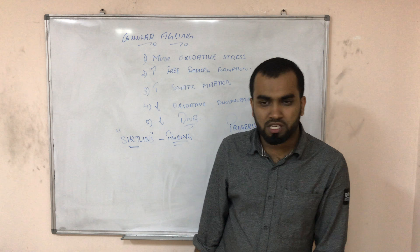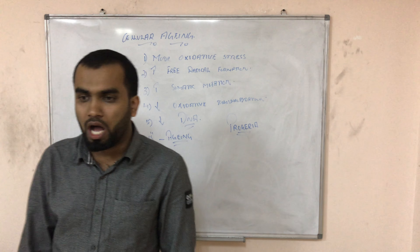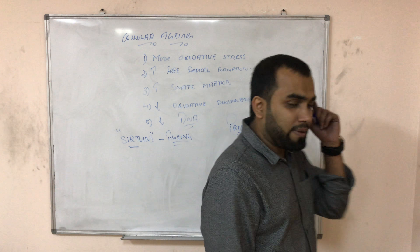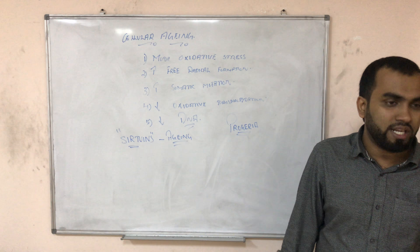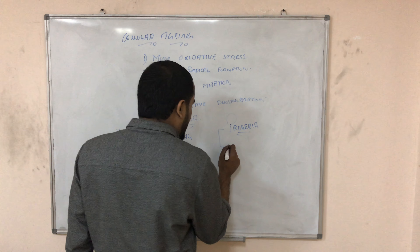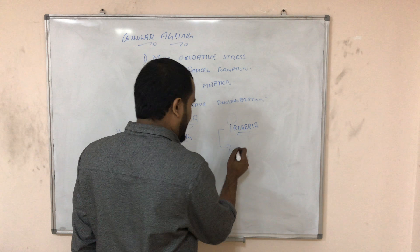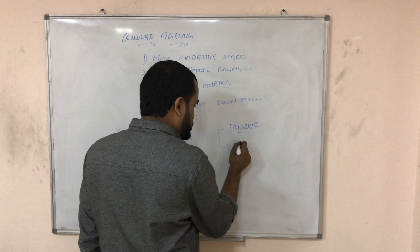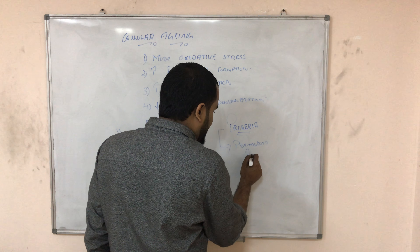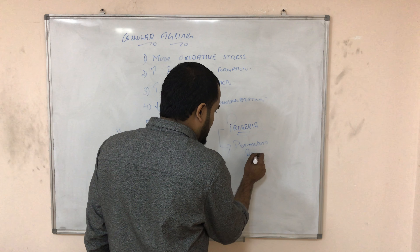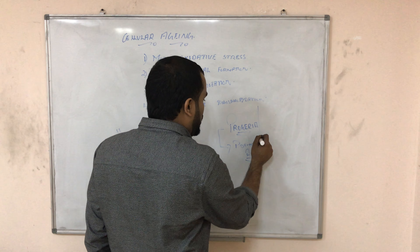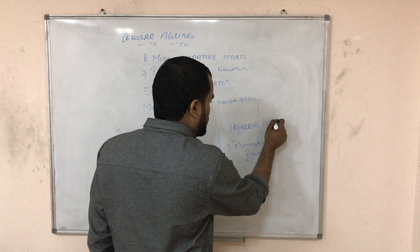There is a very famous Bollywood movie called 'Paa' starring Amitabh Bachchan in which he has the disease called progeria. Progeria is premature aging — before becoming an adult, the person undergoes aging. It starts in early childhood.